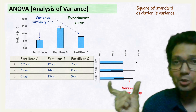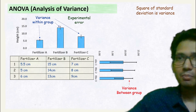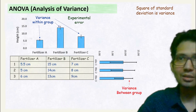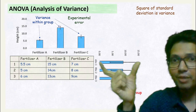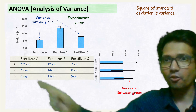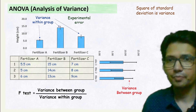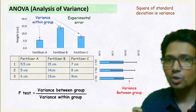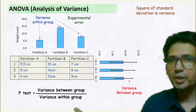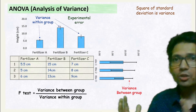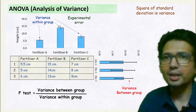Now this variation that you see is known as variance between group — meaning the variation between A, B, and C. For the first experiment, the variation between Treatment A, B, and C is indicated by this variance. Similarly, for the second and third experiments, you can have the variation between each of the treatments. The F-test is nothing but the ratio of variance between group divided by variance within group. So the overall variance between group divided by the overall variance within group is the F ratio.